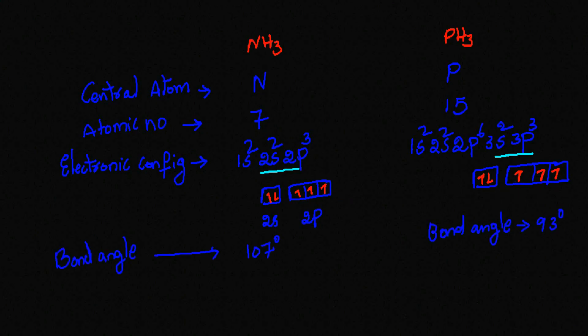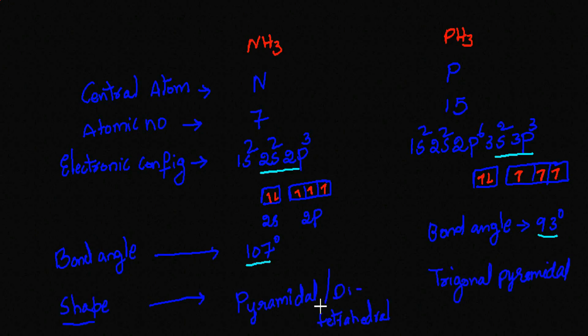There are two important factors to understand this concept. Number one: bond angle — for NH3 it is 107 degrees and for PH3 the bond angle is 93 degrees. The shape of NH3 is distorted tetrahedral and the shape of PH3 is trigonal pyramidal. Now let's find out why NH3 has sp3 hybridization and PH3 has no hybridization at all.